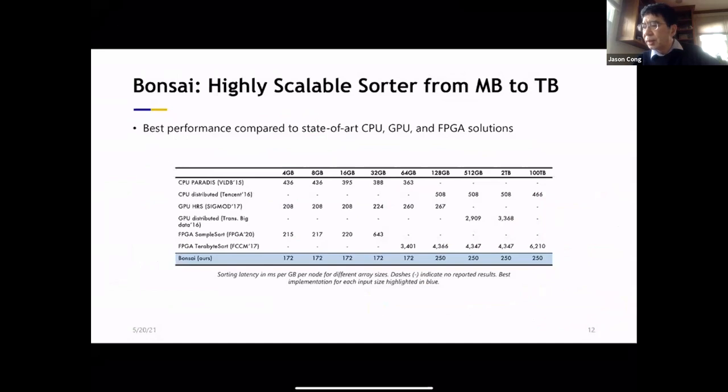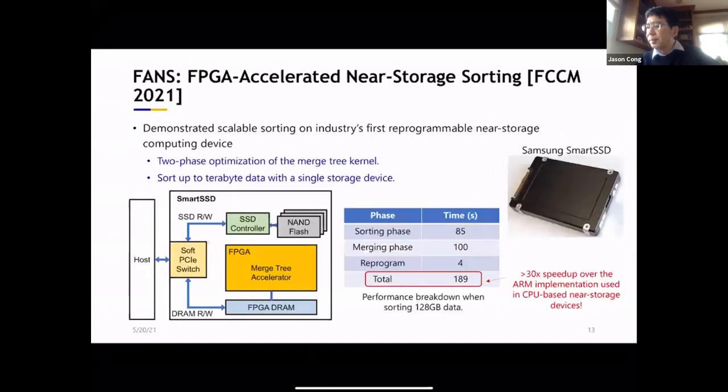So if you look at this table, we compare with the leading CPU sorting engines and the GPU sorting engines and other FPGA works. So this is our sorting performance. In terms of gigabytes per second we can sort, we actually have the best result across the board from gigabytes all the way to hundreds of terabytes.